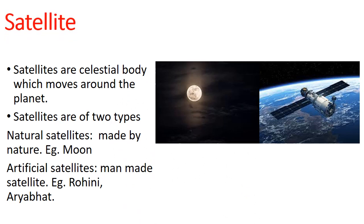Satellites are celestial bodies which move around planets. Satellites are of two types: natural satellites and artificial satellites. Natural satellites are made by nature, for example, moon. Artificial satellites are man-made satellites, for example, Rohini and Aryabhata.